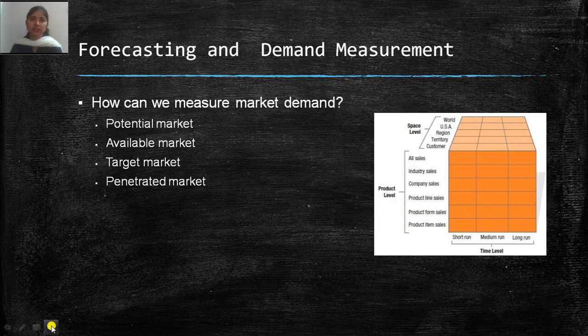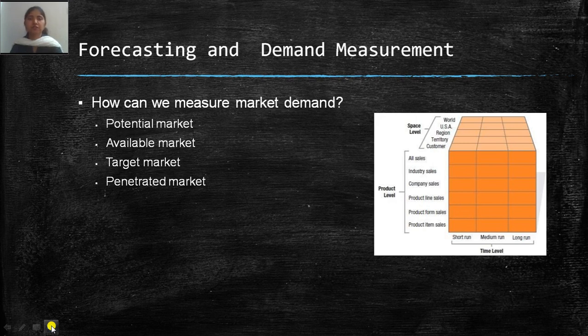Let's define certain markets. Market means the actual plus potential buyers of a product. Potential market is when customers show interest in your offering. Available market is when customers have the interest, desire, access, and income for your offering. Target market is the qualified, most suitable market you can pursue. Penetrated market means current consumers purchasing your products.